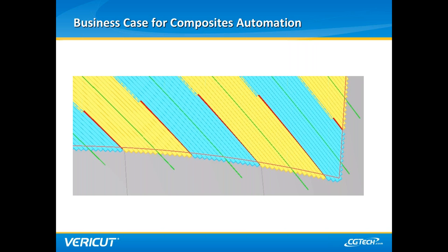In a convergence zone, toes are dropped — meaning a full complement of toes is not used — in order to reduce overlap as courses converge. The red triangles in the picture represent gaps caused by toes being dropped when toe-to-toe overlap exceeds a specified threshold. For ACM, these convergence zones are necessary in areas of curvature that would cause material to wrinkle from excess steering. These gaps and overlaps are necessary, part of the design, and on purpose — and having manufacturing and quality groups that understand this key difference is vital to the success of ACM.